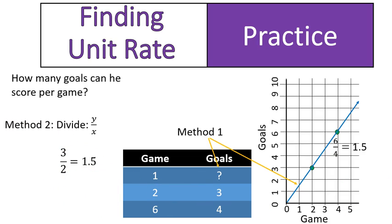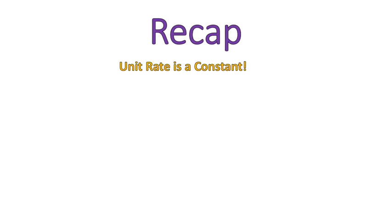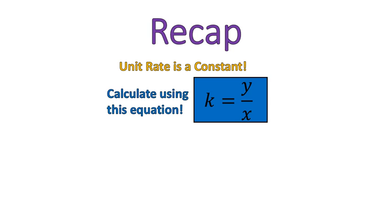As a quick recap, the unit rate is a constant. It's calculated using the constant equation. Our unit rate is y divided by x. And our denominator should always be equal to 1. I hope that that video was helpful for you. Have a wonderful day.